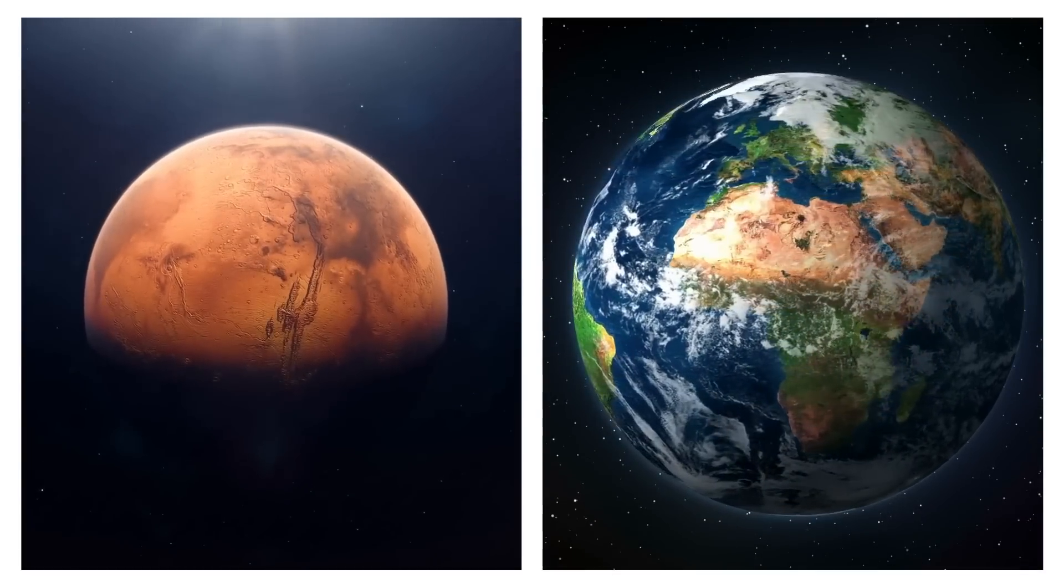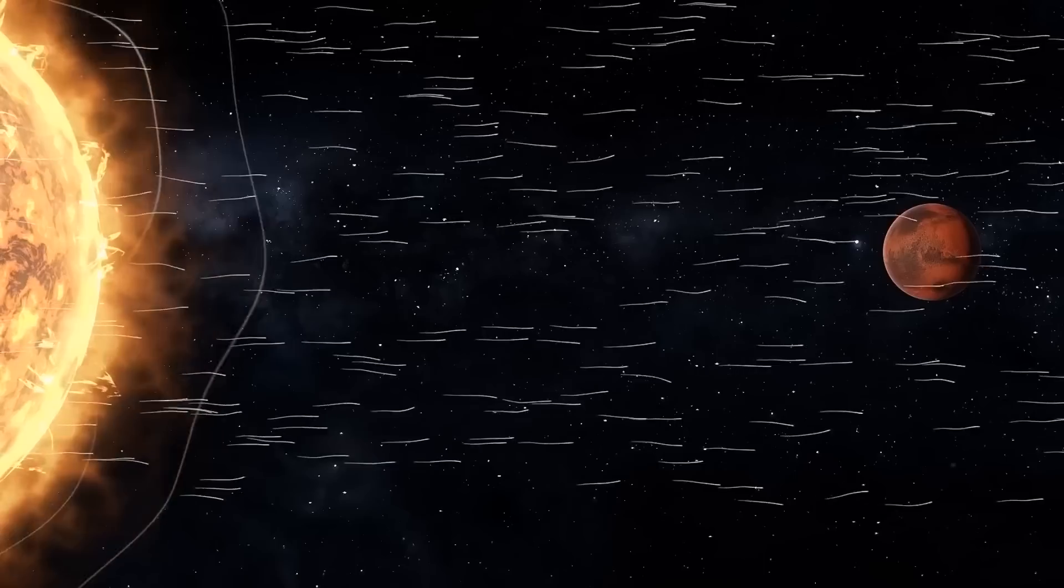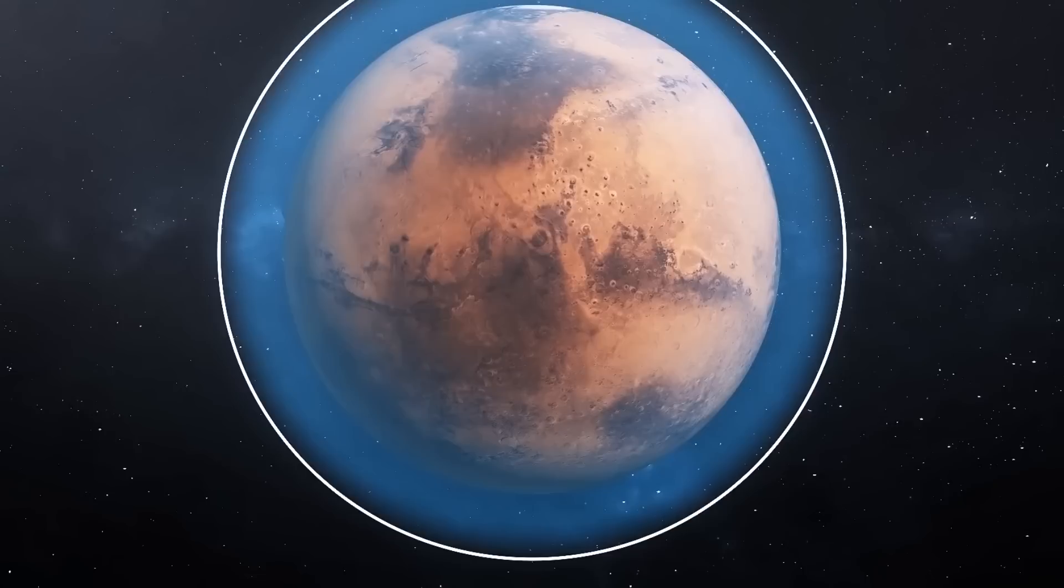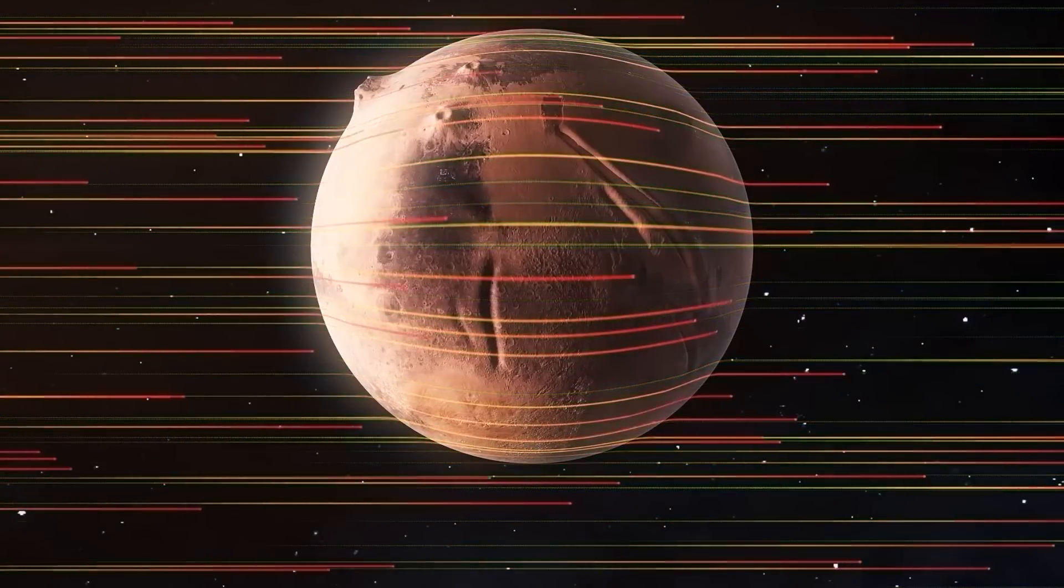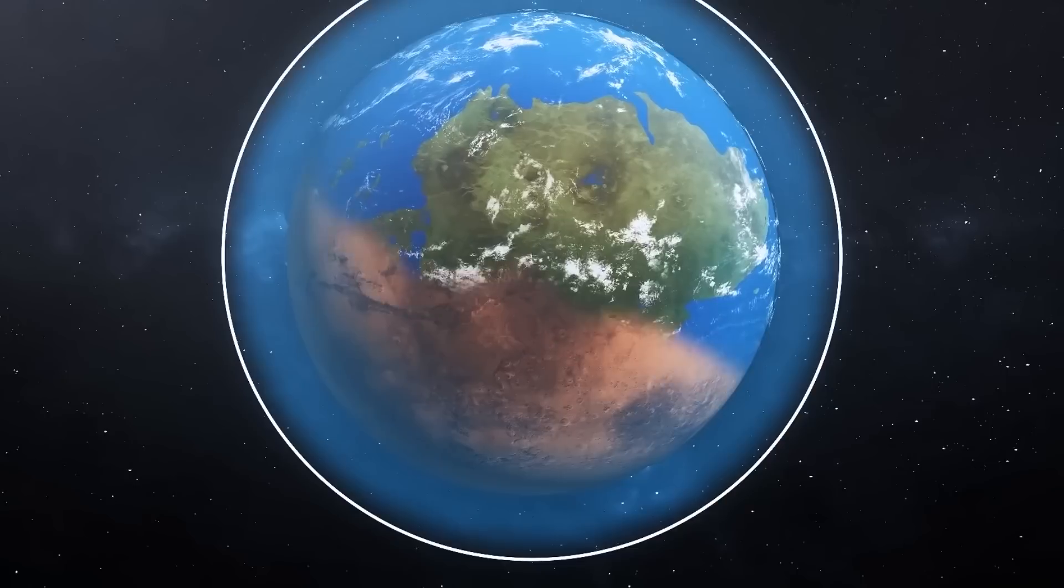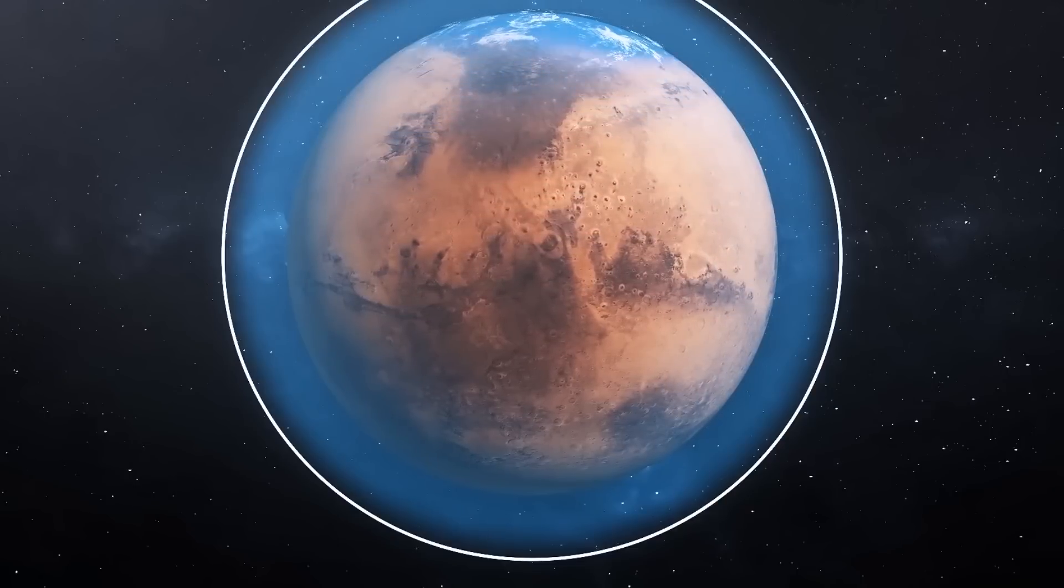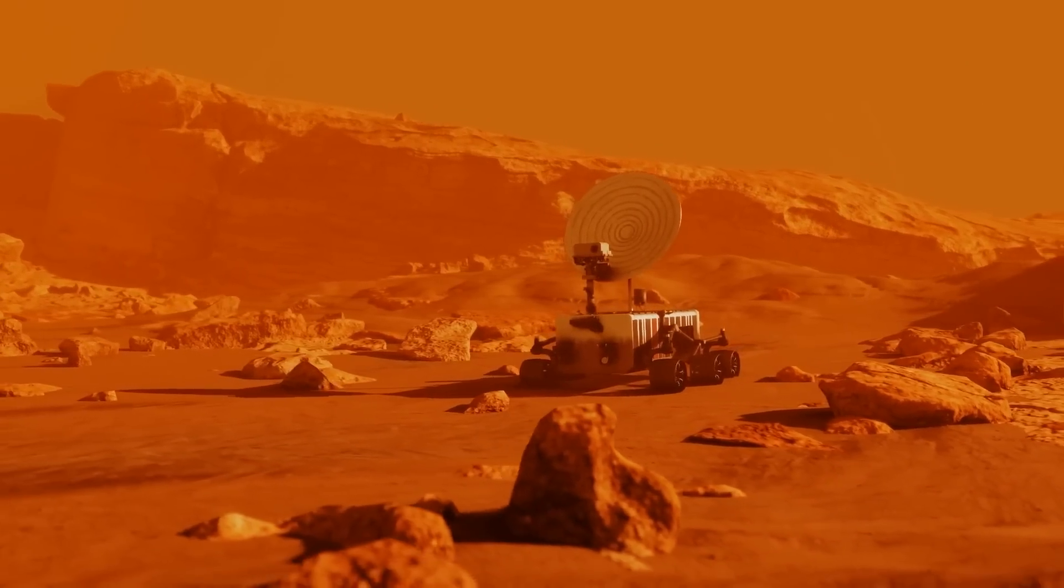Billions of years ago, Mars was a planet similar to Earth. However, something drastic happened, and its magnetic field disappeared, leaving its atmosphere unprotected against the harsh solar wind. As a result, Mars lost its water and atmosphere, becoming the barren planet we know today.